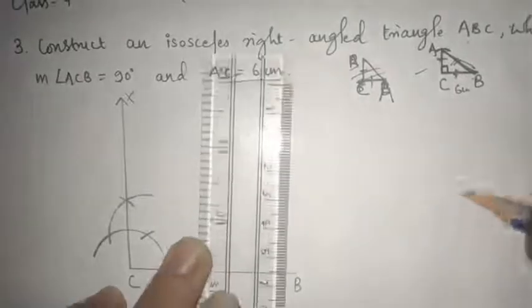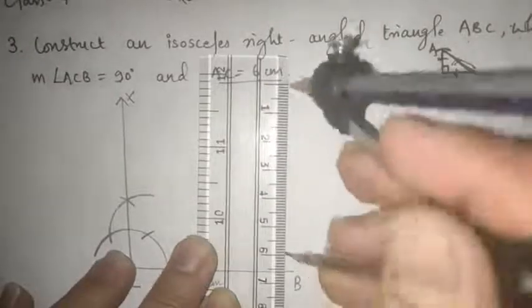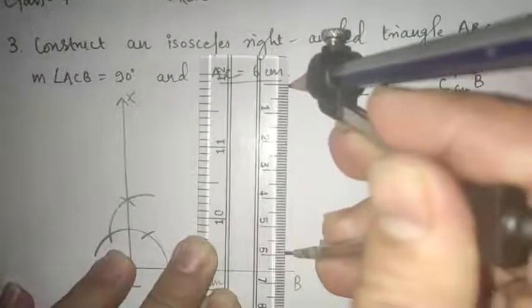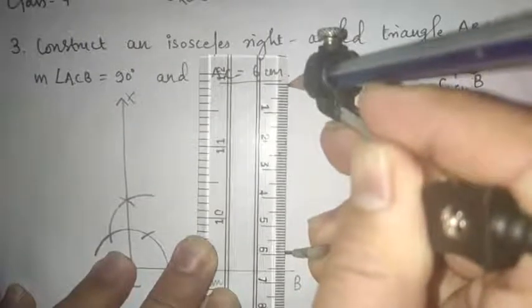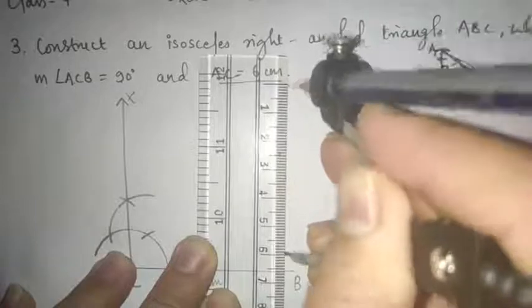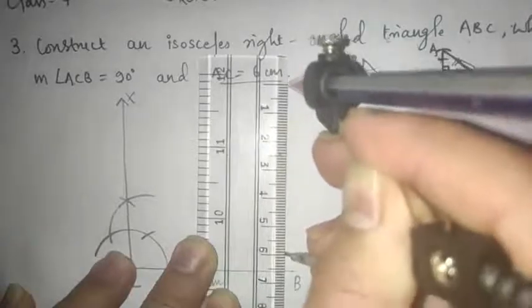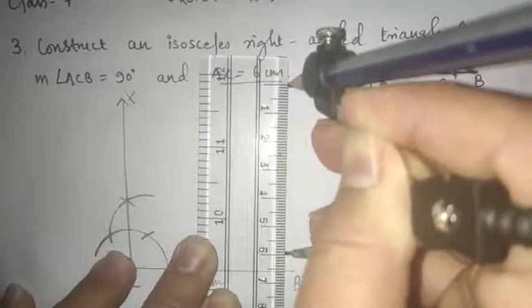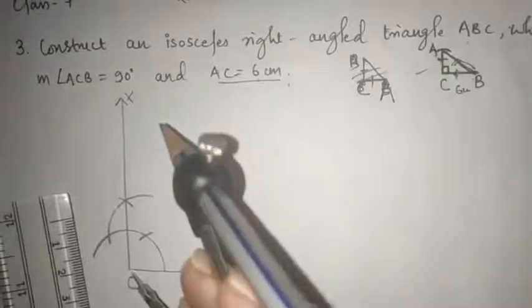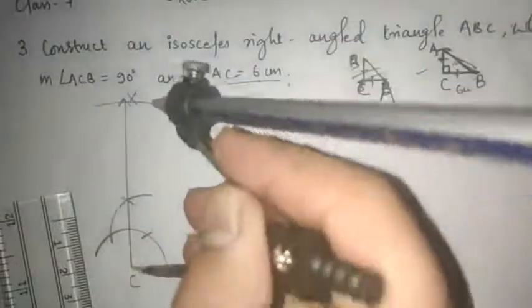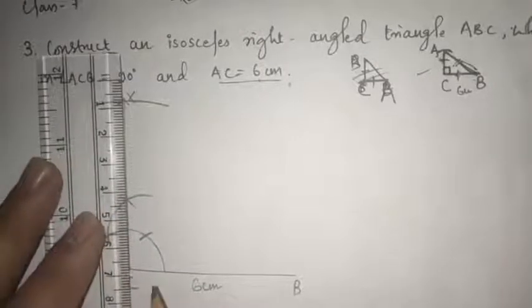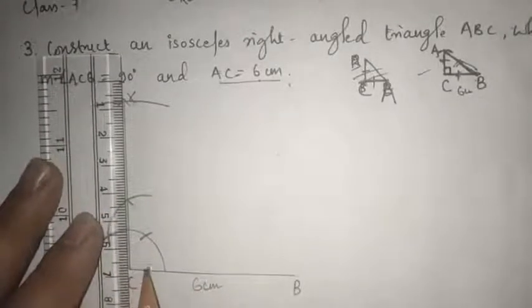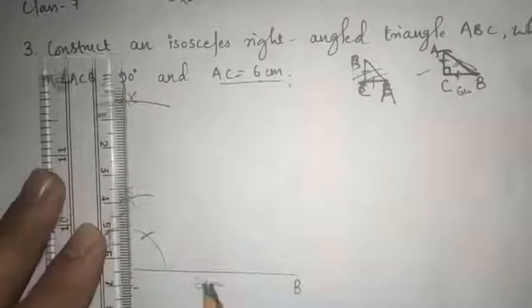So this is 6 centimeter here. Sorry for this. So this is 6 centimeter here. Okay, it's fine now. Okay, so now from C, let's put up this. Let's draw a line, a little bit longer one. Okay, so here.